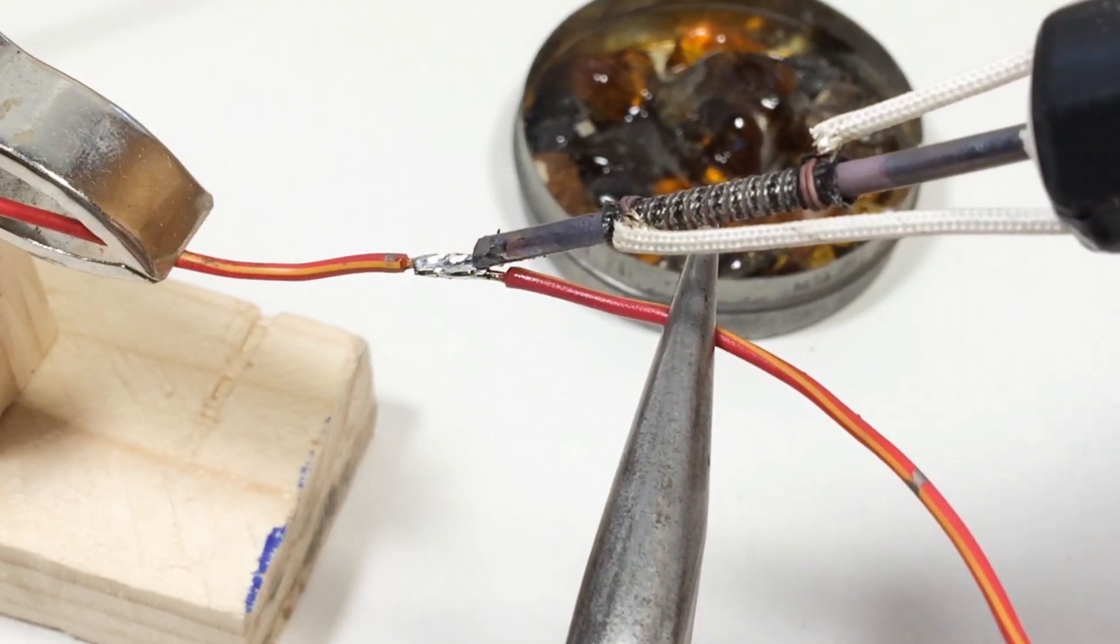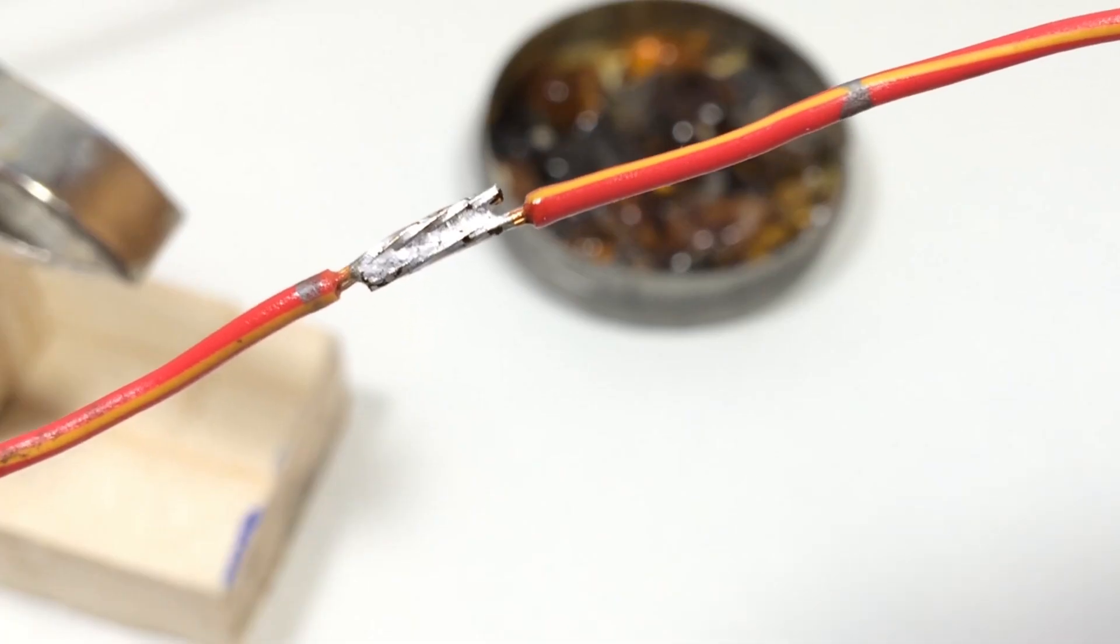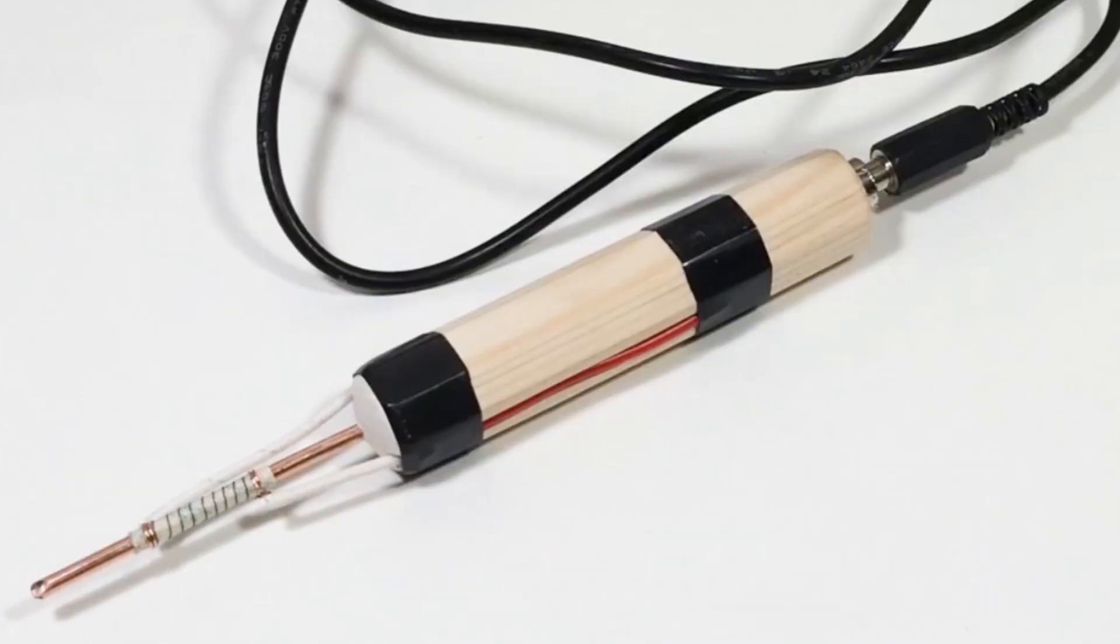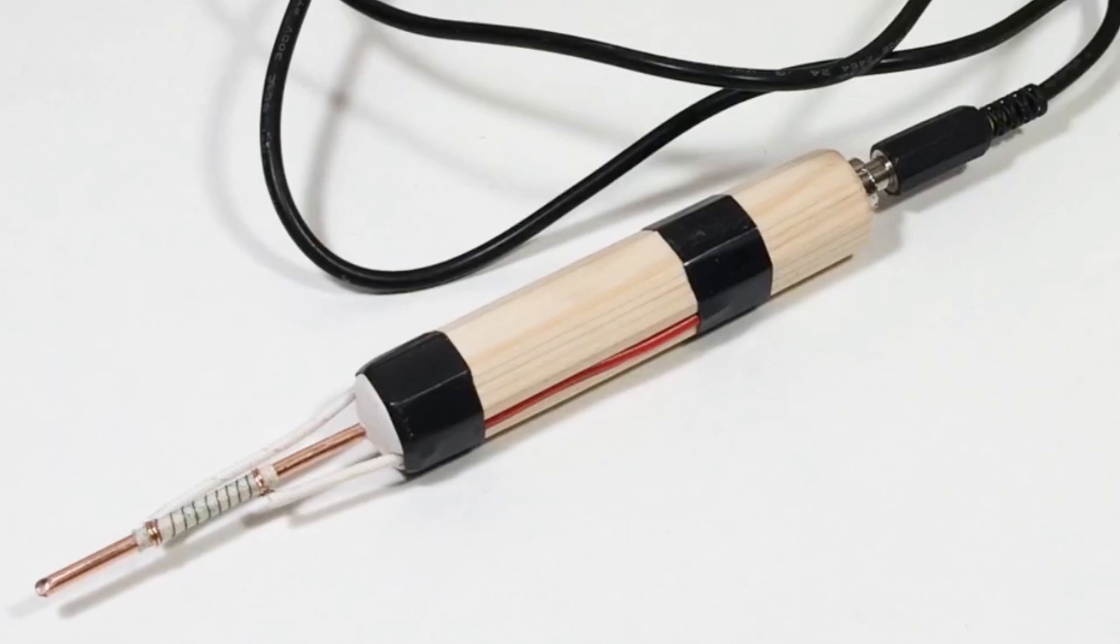What you're looking at here is a homemade soldering iron. At first glance, it looks super simple - a wooden handle, a copper tip at the front, and wires coming out at the back. But let's take a closer look inside and see why this thing performs just like a professional tool.